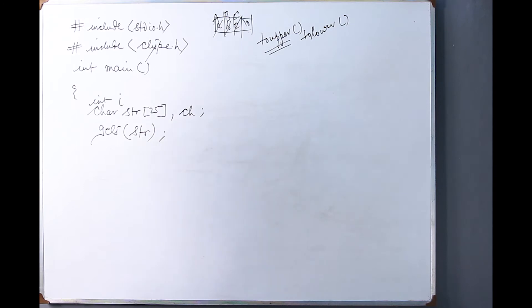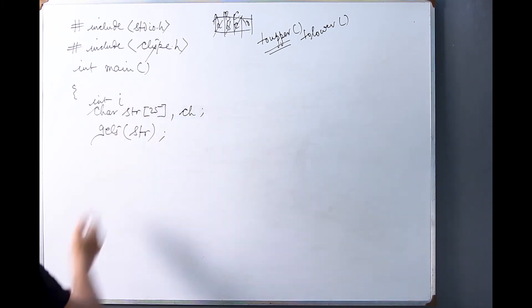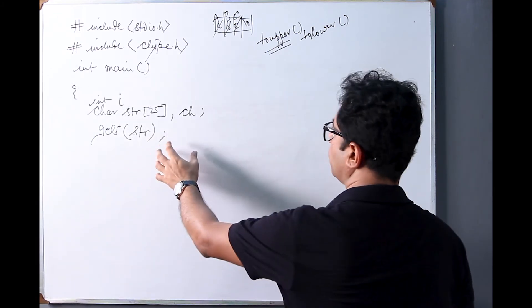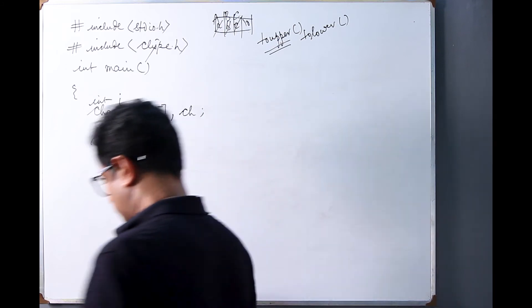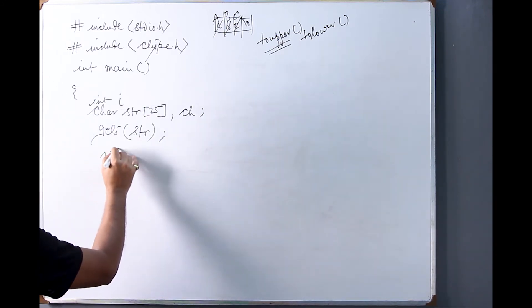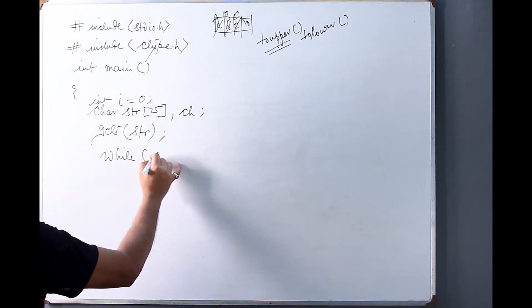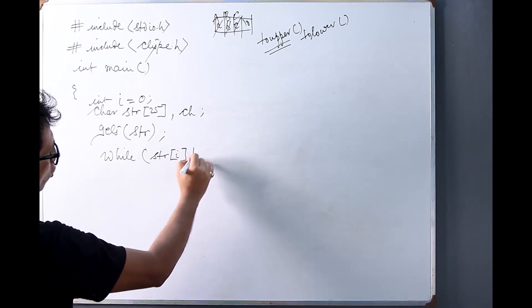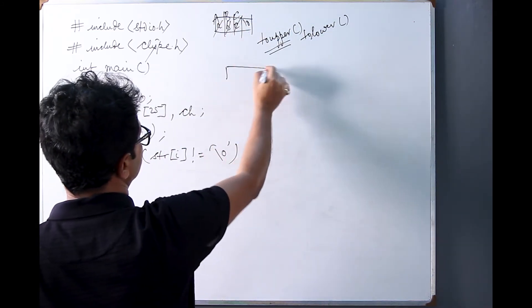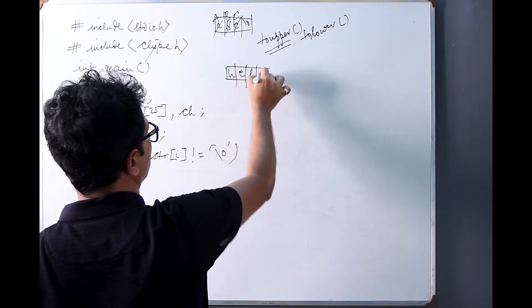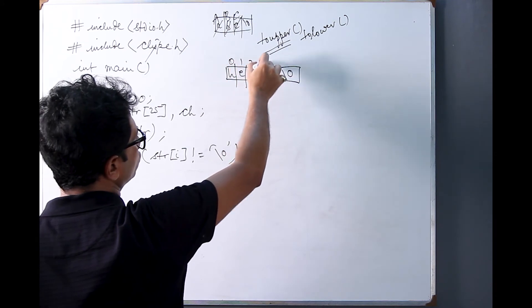So we write gets(str), which stores the input string into the str array. Now our work is to use the character handling function toupper() to convert the lowercase characters into uppercase. For that we write: i = 0, then a while loop: while str[i] is not equal to the null character — that is the termination sequence. Suppose the string entered is 'hello'.